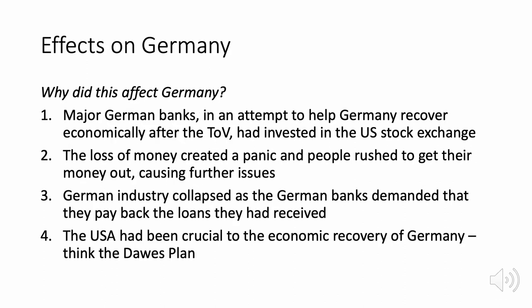Why does this affect Germany? Major German banks, because of the £6.6 billion in reparations imposed by the diktat of the Treaty of Versailles, had invested in the US stock exchange. The loss of money in the US led to massive panic and people in Germany rushing to get their money out — almost like a Black Thursday happening in Germany too. German industry fully collapsed as banks demanded loans back, and the USA had been crucial to Germany's recovery through the Dawes Plan — a $25 billion loan — proving how dependent Germany was on the US.